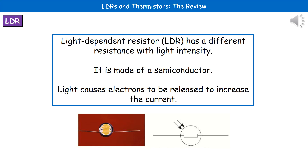The second component we're going to look at is what's called an LDR, or light dependent resistor. This one has different resistance as light intensity changes. Again, it's made of a semiconductor, and in this case light actually causes electrons to be released — the greater the amount of light, the more electrons are released. You can see the actual component and its circuit symbol at the bottom left, which you need to be able to recognize and draw in the exam.